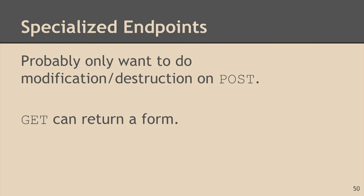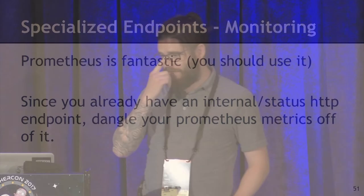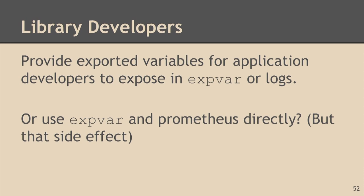A note on specialized endpoints: you probably only want to do modification or destruction on a POST — you don't want to accidentally shut down a service because somebody pointed a web browser at an address. I'm not going to say much about monitoring, but I will say this: you should use Prometheus. It is such a godsend, and we are so happy since we switched to it. Prometheus requires you to expose an HTTP handler, and since you already have a status endpoint — this expvar endpoint — you can dangle it right next to that. A special note to library developers: think about providing exported variables that expose your library's internal state in some kind of struct or variable, so that an application developer has the option of exporting that to Prometheus or into expvar for more visibility.